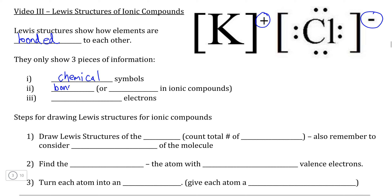The second detail in Lewis structures is what we call bonds, which are the attractive forces that hold the compound together. In ionic compounds, these bonds are represented by the charges of each of the ions, because this attractive force between charges allows the compound to hold itself together. And finally, unlike Bohr-Rutherford diagrams, the only electrons shown in Lewis structures of atoms and ions are the valence electrons.